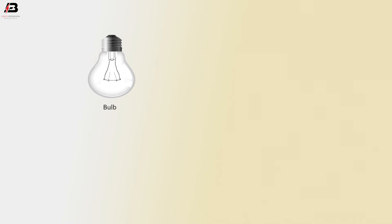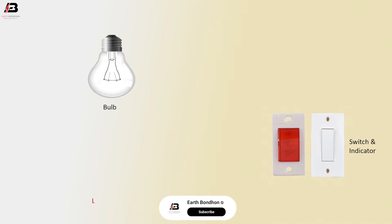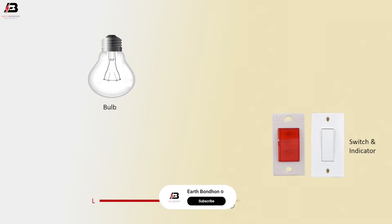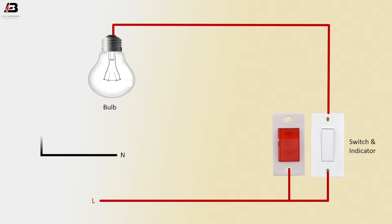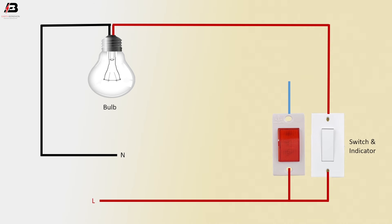So here let's start: bulb, switch, and indicator face connection. Input to switch and indicator face connection. From switch to bulb, neutral connection to bulb neutral point, common connection between switch and indicator.